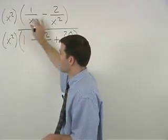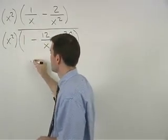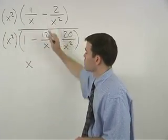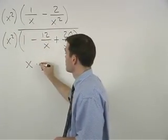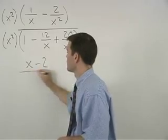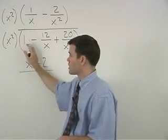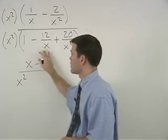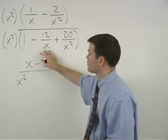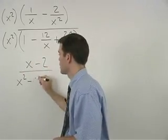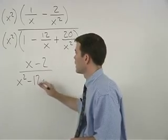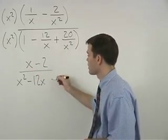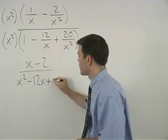x squared times 1 over x is x, and x squared times negative 2 over x squared is negative 2. In the denominator, x squared times 1 is x squared, x squared times negative 12 over x is negative 12x, and x squared times positive 20 over x squared is positive 20.